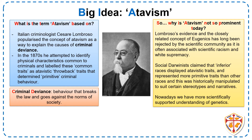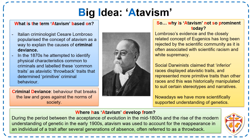So why is atavism not so prominent today? Lombroso's evidence and the closely related concept of eugenics, which is often linked to Nazi Germany, has long been rejected by the scientific community as it is often associated with scientific racism and white supremacy. Social Darwinists claimed that inferior races displayed atavistic traits and represented more primitive traits than other races, and this was historically manipulated to suit certain stereotypes and narratives. Nowadays, we have a more scientifically supported understanding of genetics.